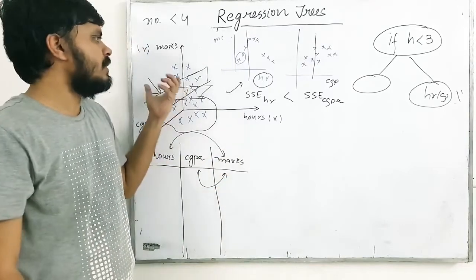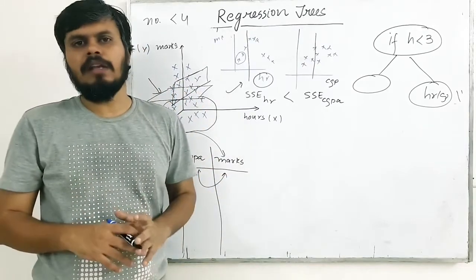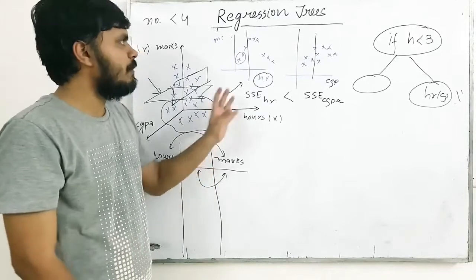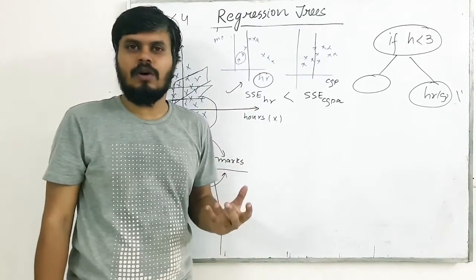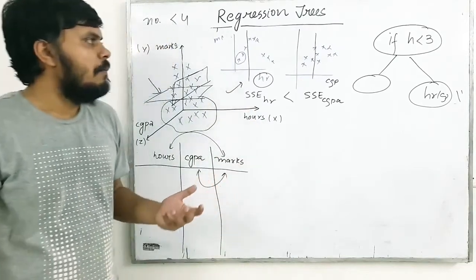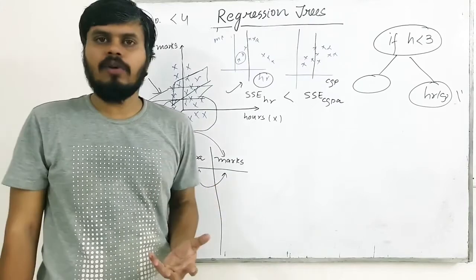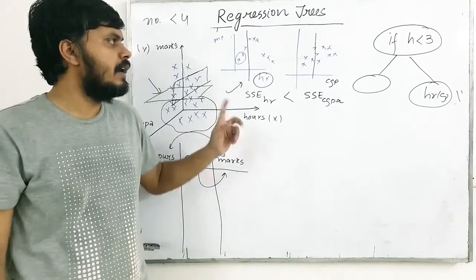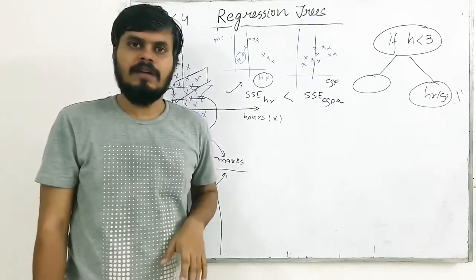And eventually your decision tree gets constructed. Whenever 4 points are left, you take their mean. I hope the entire discussion is clear — I know it's a little complex, but I'll try to give you a problem to make your understanding more concrete.